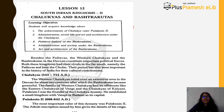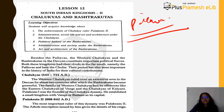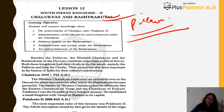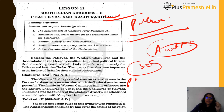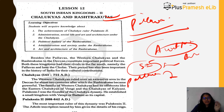With this we are done with the Pallavas. In the next class we will start with two more South Indian kingdoms — the Chalukyas and the Rashtrakutas. So in ancient history, North India is done and in South India we have covered the Sangam age, Satavahanas, and now the Pallavas. Next up: Chalukyas and Rashtrakutas.